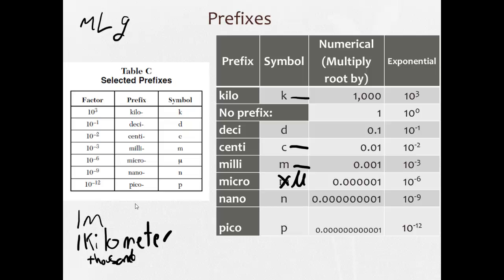So if I say one milligram, that's one thousandth of a gram or 0.001 grams. If I say one centimeter, that's one one hundredth of a meter or 0.01 meter. And we're going to do a bunch of these in class.